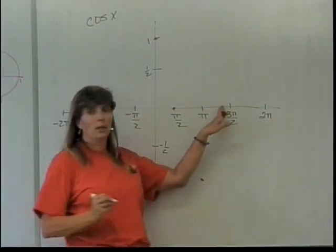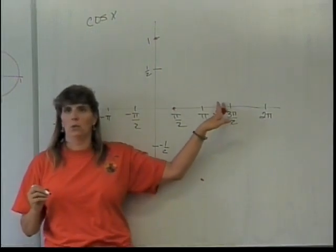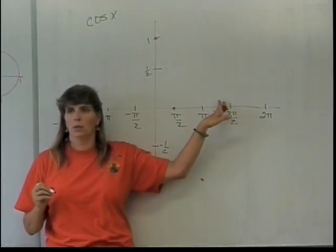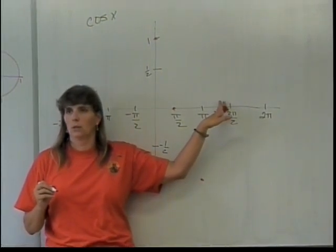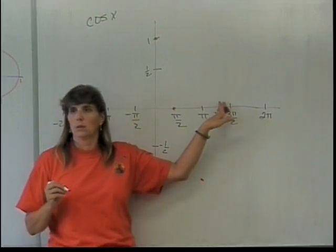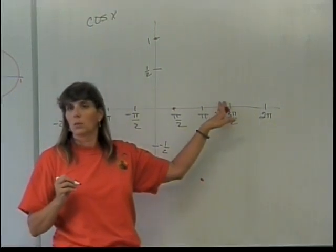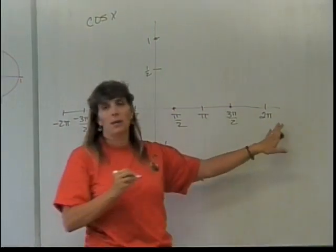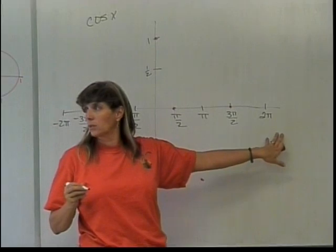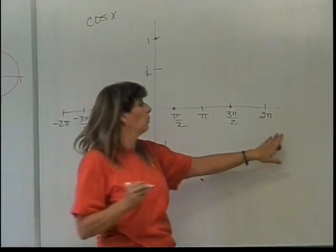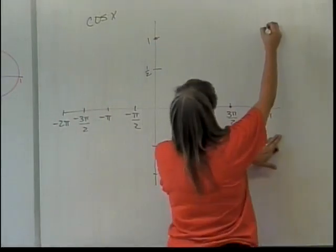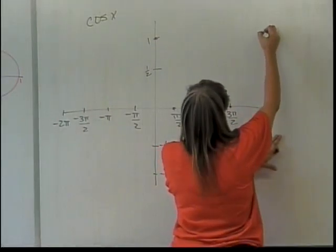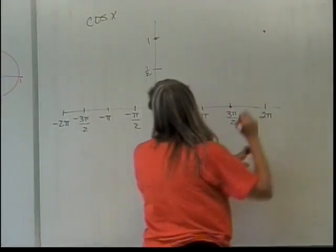When I'm at the angle 3 pi over 2, what's the x-coordinate, or the cosine of that angle? It's 0. And when I get back to 2 pi, what's the cosine of that angle? 1. That should be approximately right there.